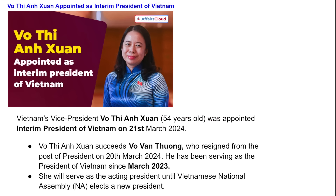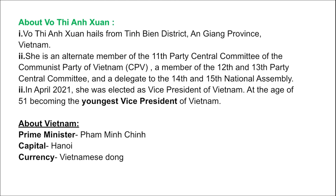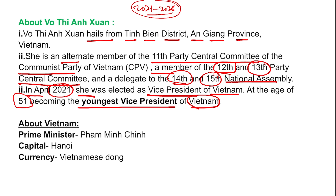Vietnam's Vice President Vo Thi Anh Xuan, who is 54 years of age, was appointed as the interim president of Vietnam on 21st March. She will serve as acting president until the Vietnamese National Assembly elects a new president. She hails from Tinh Bien district of An Giang province of Vietnam. She is a member of the 12th and 13th Party Central Committee and delegate to the 14th and 15th National Assembly. In April 2021, she was elected as the Vice President of Vietnam at the age of 51, becoming the youngest Vice President of Vietnam. The Prime Minister of Vietnam is Pham Minh Chinh, the capital is Hanoi, and the currency is Vietnamese Dong.